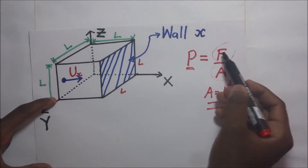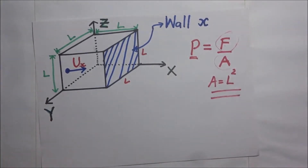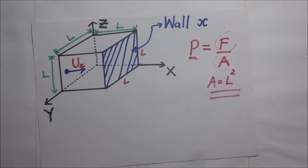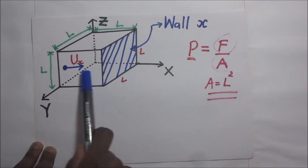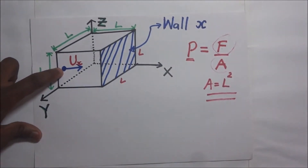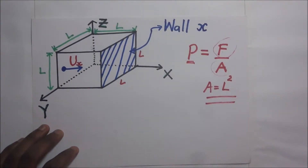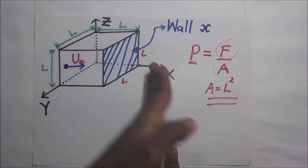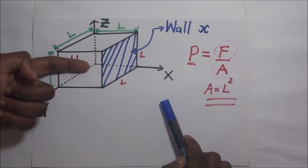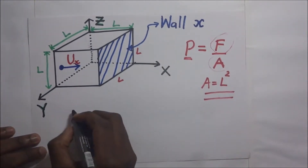Now we find the force F that the particle exerts on wall x. From Newton's second law of motion, force is directly proportional to the rate of change of momentum, and it acts in the direction of the force. So F equals the rate of change of momentum of the particle as it collides with the wall and bounces back.